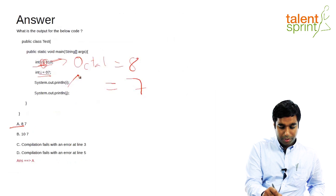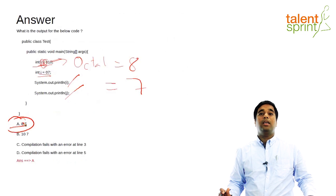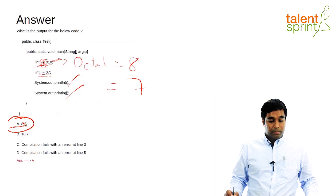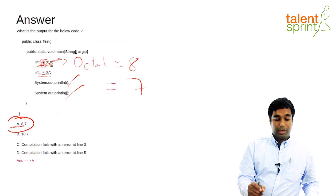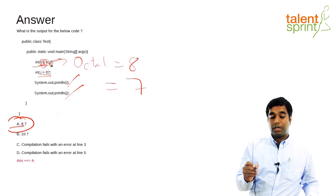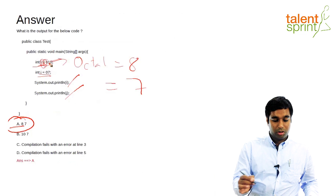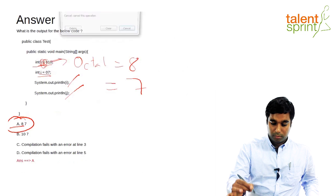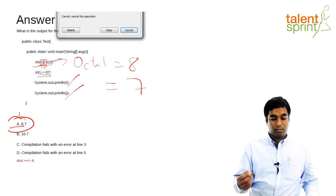The next integer 07 in octal is equivalent to 7. Hence when you print I and J, the answer printed is 8 and 7. When you put a zero in front of an integer, that integer literal is treated as an octal number and not a decimal number. This is what the concept behind this question is — a very small concept, but if you know it, you can solve this question very easily.